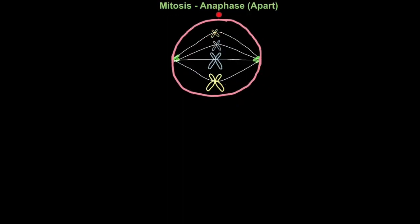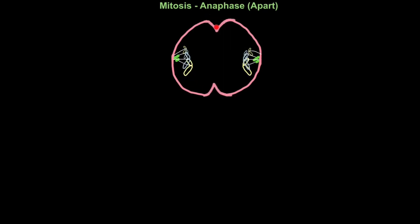The next phase is called anaphase. This is when the spindle fibers start to contract, pulling apart the sister chromatids, like so. The cytoplasm also starts to pinch inwards.